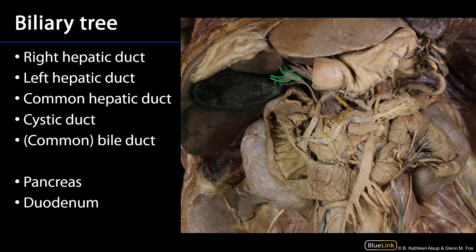Where they come together is the common hepatic duct, and that common hepatic duct is joined by the cystic duct, which is coming from the gallbladder.